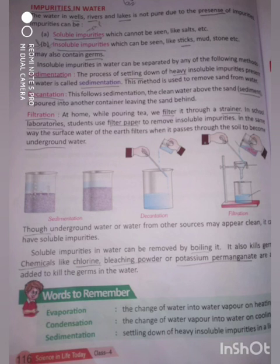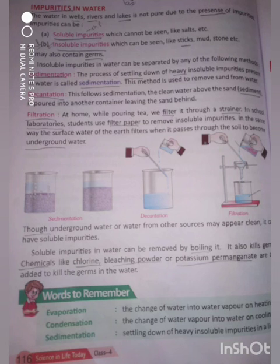In school laboratories, students use filter paper to remove insoluble impurities. In the same way, the surface water of the earth filters when it passes through the soil to become underground water. Though underground water or water from other sources may appear clean, it can have soluble impurities. Soluble impurities in water can be removed by boiling — it also kills germs. Chemicals like chlorine, bleaching powder, or potassium permanganate are also added to kill the germs in the water. So this is all for today.